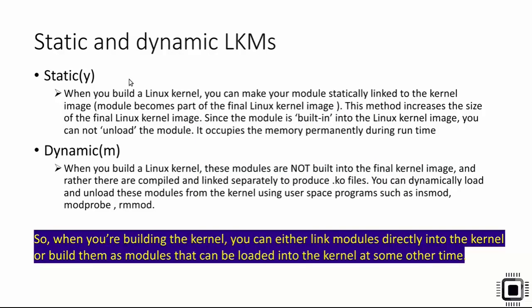There are two main types of LKMs: static and dynamic. For static LKMs, when you build a Linux kernel you can make your module statically linked to the kernel image, meaning the module becomes part of the final Linux kernel image. This method increases the size of the final kernel image, and since the module is built into the kernel image you can't unload it — it occupies memory permanently during runtime.